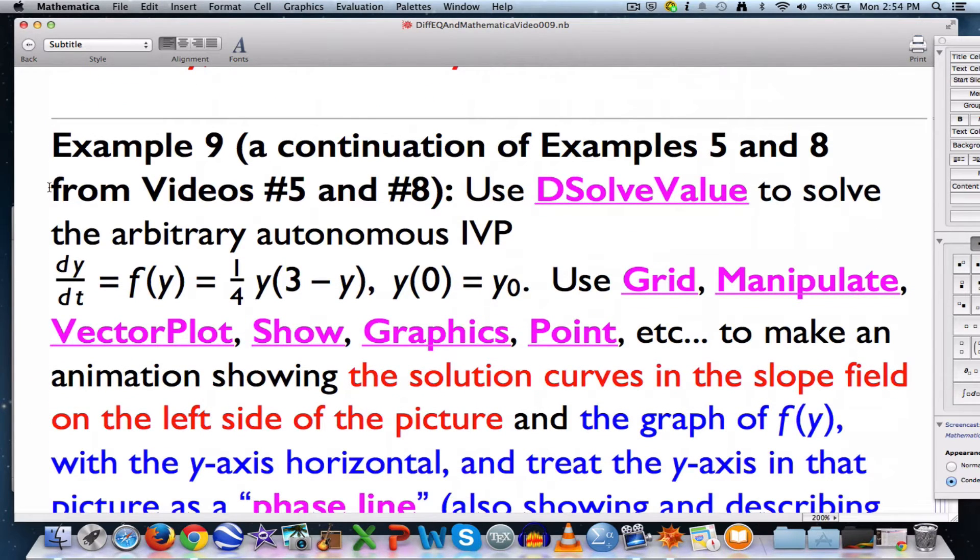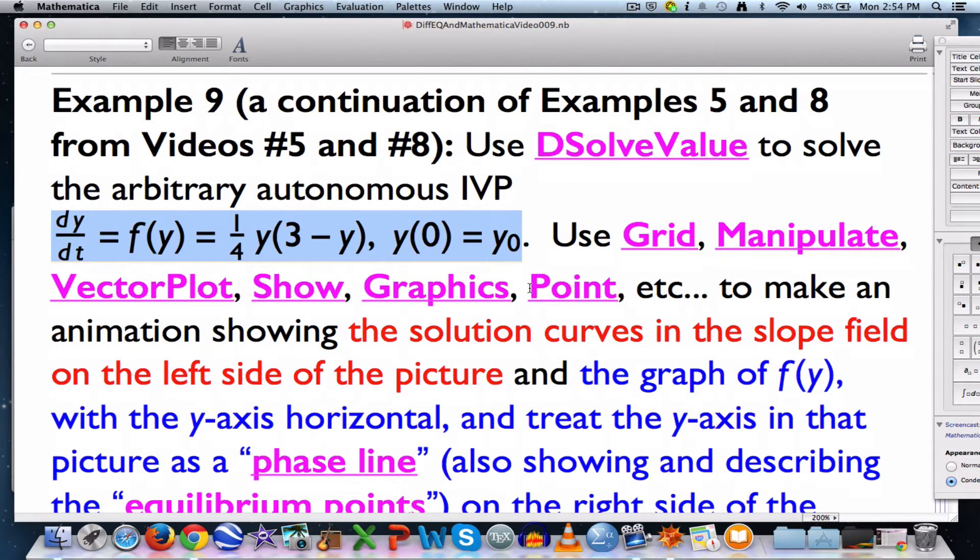It's the same example as in videos 5 and 8. We've got this fixed but arbitrary initial value problem here. It's an autonomous differential equation, dy/dt equals this expression, which doesn't have any t's in it. That means the slope field is constant for constant values of y, constant along horizontal lines. y(0) = y0 is your fixed but arbitrary initial condition. I'm going to call the right-hand side f(y). When I graph that function of y, I will make the y-axis horizontal, which is different than what's in the slope field.